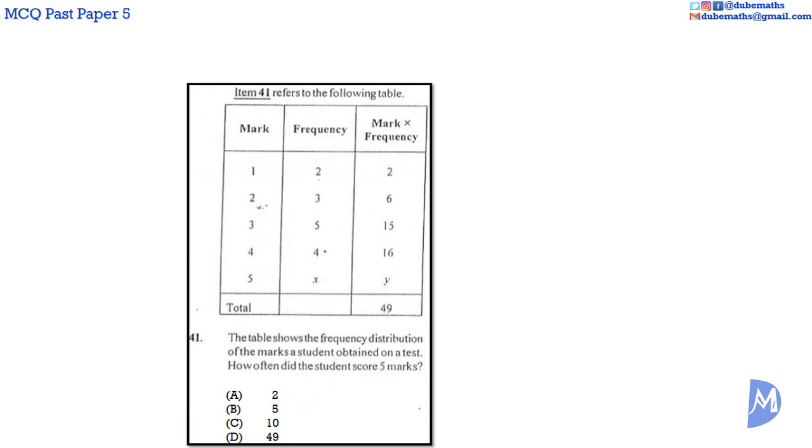Well, we have everything we need to work out Y. The total is equal to 49. Therefore, 2 plus 6 plus 15 plus 16 plus Y is equal to 49. Y must be equal to 10.